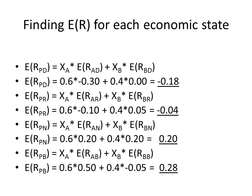Our next step is to find the expected return in each economic state. In our example, the four states are depression, recession, normal, and boom. To find the expected return of the portfolio in depression, we take the weight on A (.6) times the expected return on A in depression (negative .30), plus the weight on B (.4) times the expected return on B in depression, which is zero. Working out the math, the portfolio is expected to return minus 18% during depression.